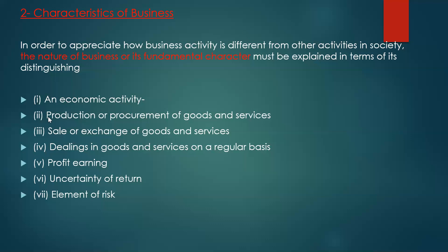Moving to the next characteristic: production and procurement of goods and services. Business is basically all about the production of goods and services. Goods must be either produced or procured by the business enterprise. Every business enterprise either manufactures goods, or deals in, or acquires them from the producer before providing goods to the customer.